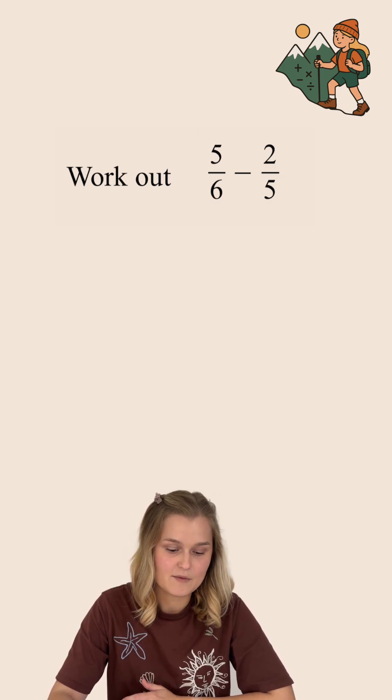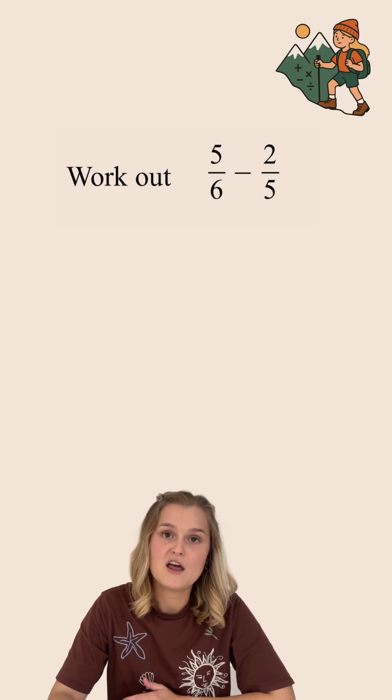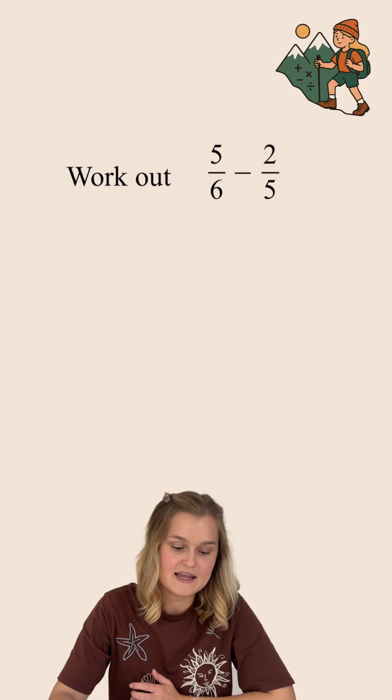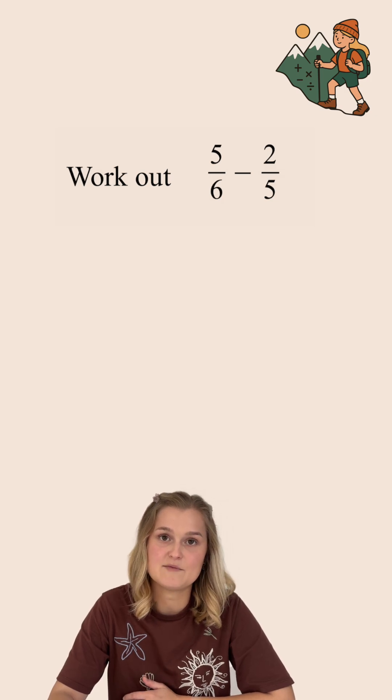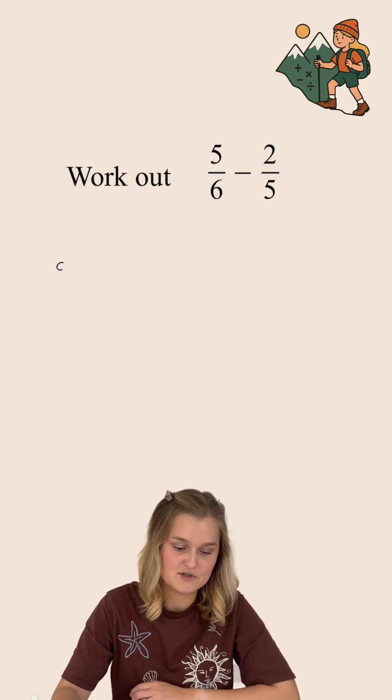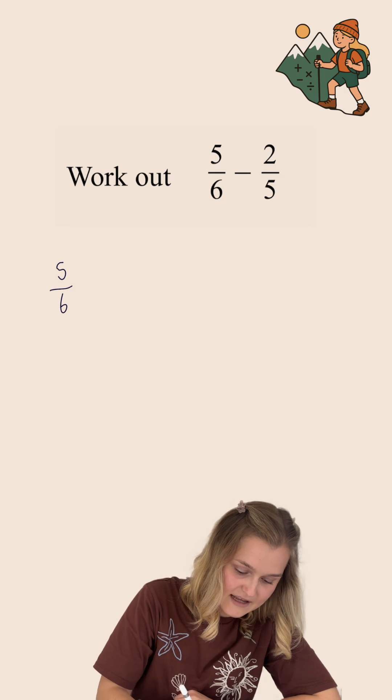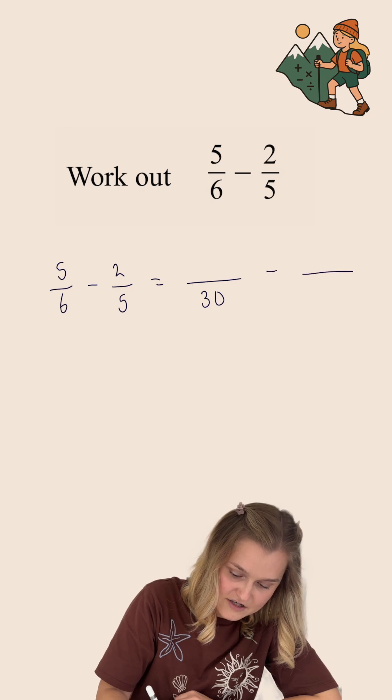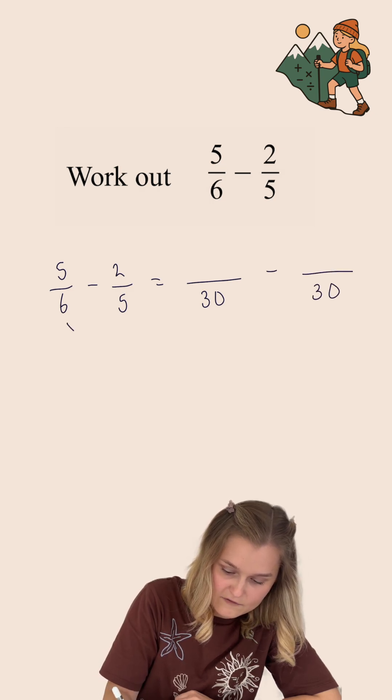Now, to decide on your common denominator, you're going to work out the lowest number in both times tables. So I'm going to be working out the lowest number in the 6 and the 5 times tables. This is called the lowest common multiple. For this question, the lowest common multiple of 5 and 6 is 30. So I'm going to change both fractions to have a denominator of 30.